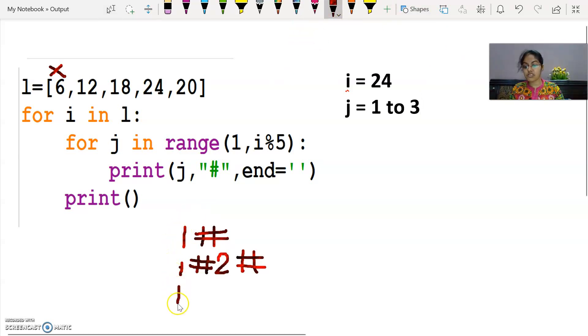So now what values will be printed? So 1, 1 hash, then 2, then hash, then 3 and then hash.